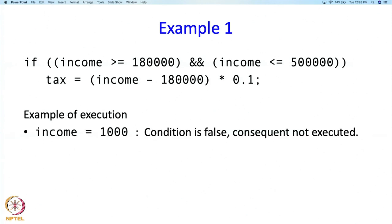Suppose income is 1000. Then the first condition, income > 180000, is false. If this condition is false, we do not even bother evaluating the second condition, because both conditions need to be true for the entire compound condition to be true. So the entire condition is deemed false, and the assignment statement does not get executed.